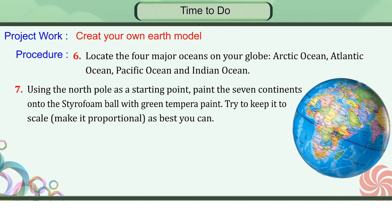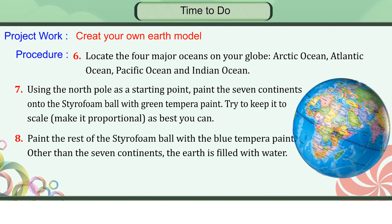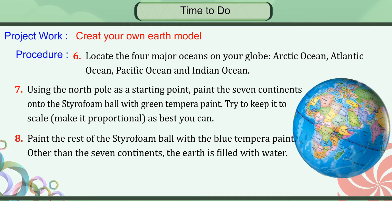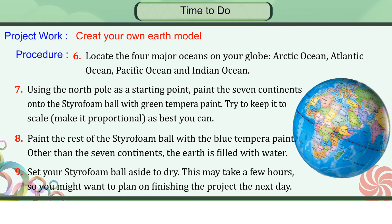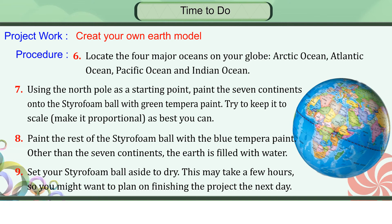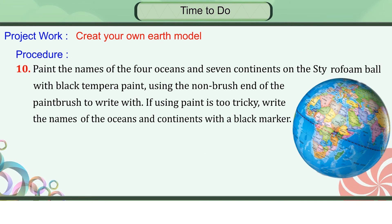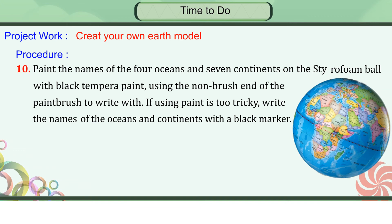This may take a few hours, so you might want to plan to finish the project the next day. Paint the names of the four oceans and seven continents on the styrofoam ball with black tempera paint, using the non-brush end of the paint brush to write with. If using paint is too tricky, write the names of the oceans and continents with a black marker. Set your Earth model aside to dry one last time.